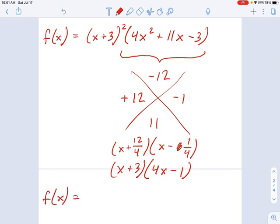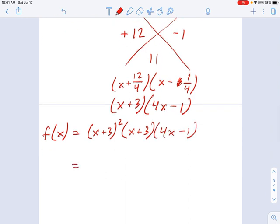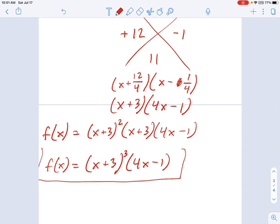So in the end, we have f of x equals x plus 3 squared. Another x plus 3. Great. Times 4x minus 1. So if you want to write that in the tidiest possible terms, that's x plus 3, which is actually a multiplicity of 3 times 4x minus 1. That is how you fully factor a fourth order polynomial.